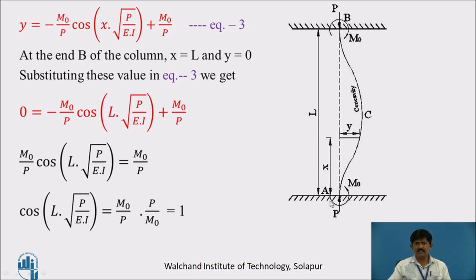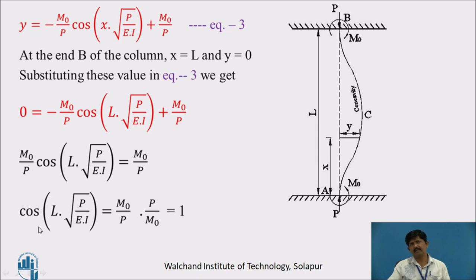Applying the boundary condition at x = L, y = 0 in equation 3: 0 = −(M₀/P)·cos(L√(P/EI)) + M₀/P. Taking the negative term to the left-hand side: (M₀/P)·cos(L√(P/EI)) = M₀/P. Dividing both sides by M₀/P: cos(L√(P/EI)) = 1.